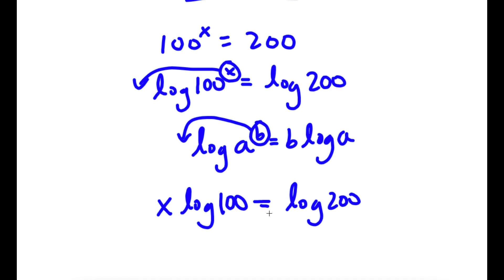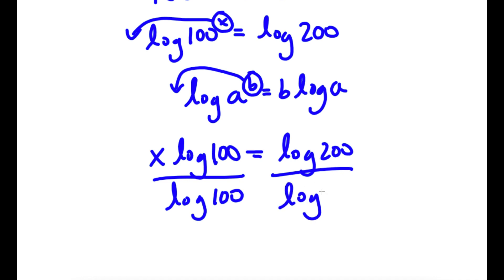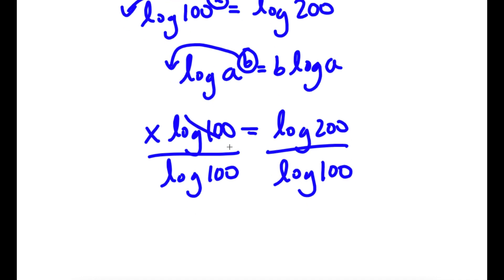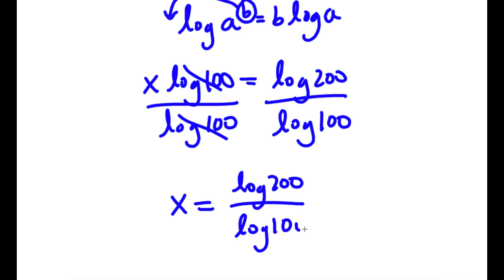Now I'm going to go ahead and divide both sides by log 100. So log 100 and log 100 cancel out, and now I have x is equal to log 200 over log 100.